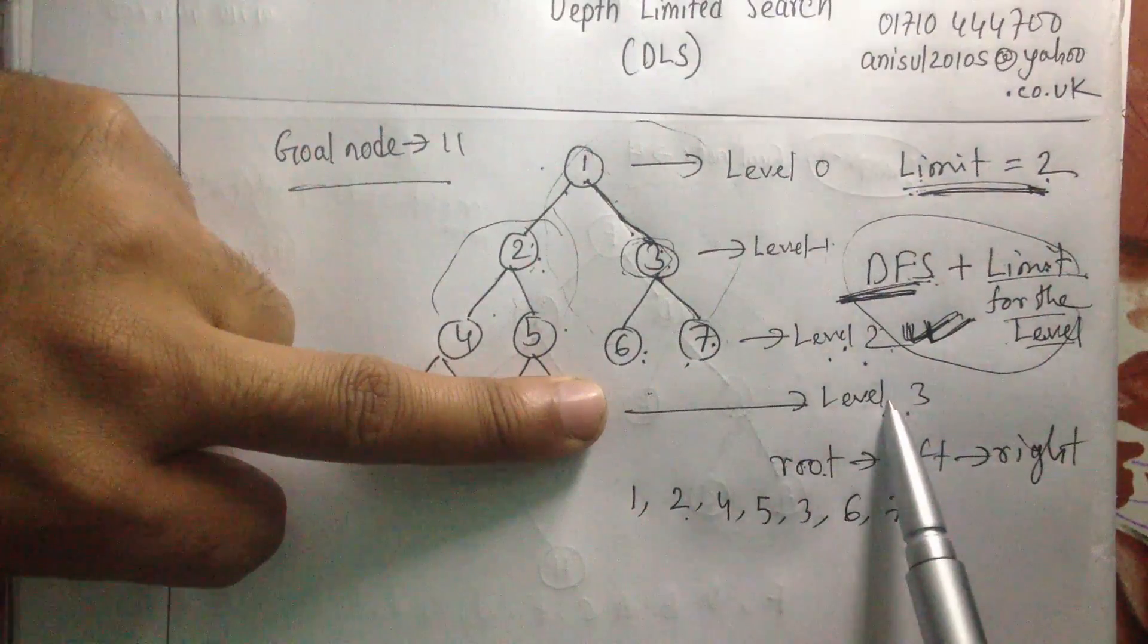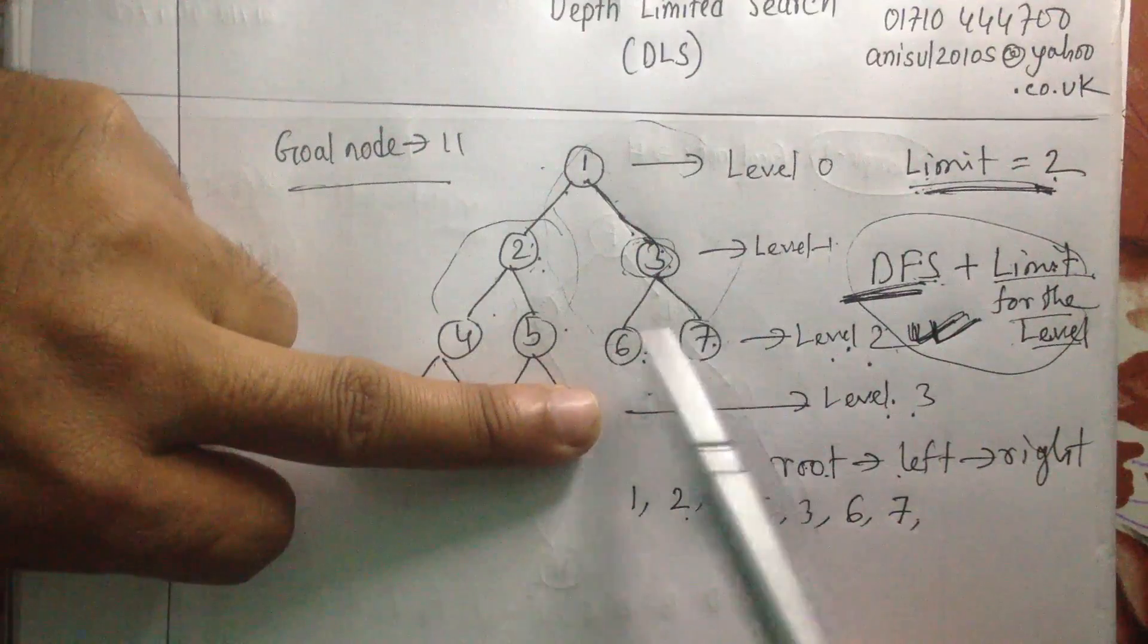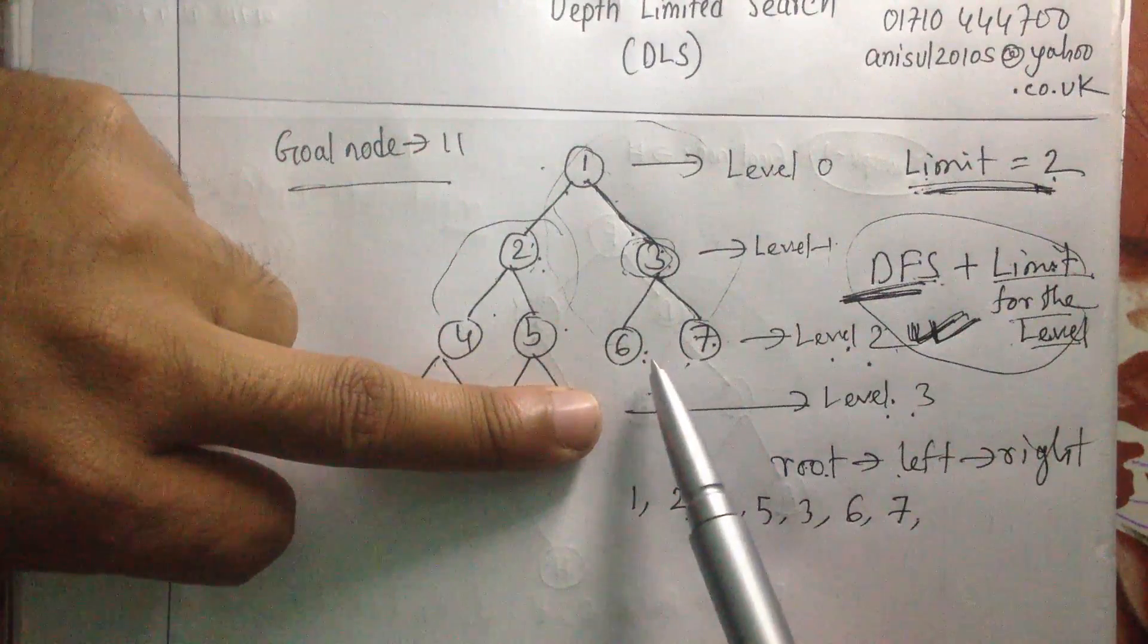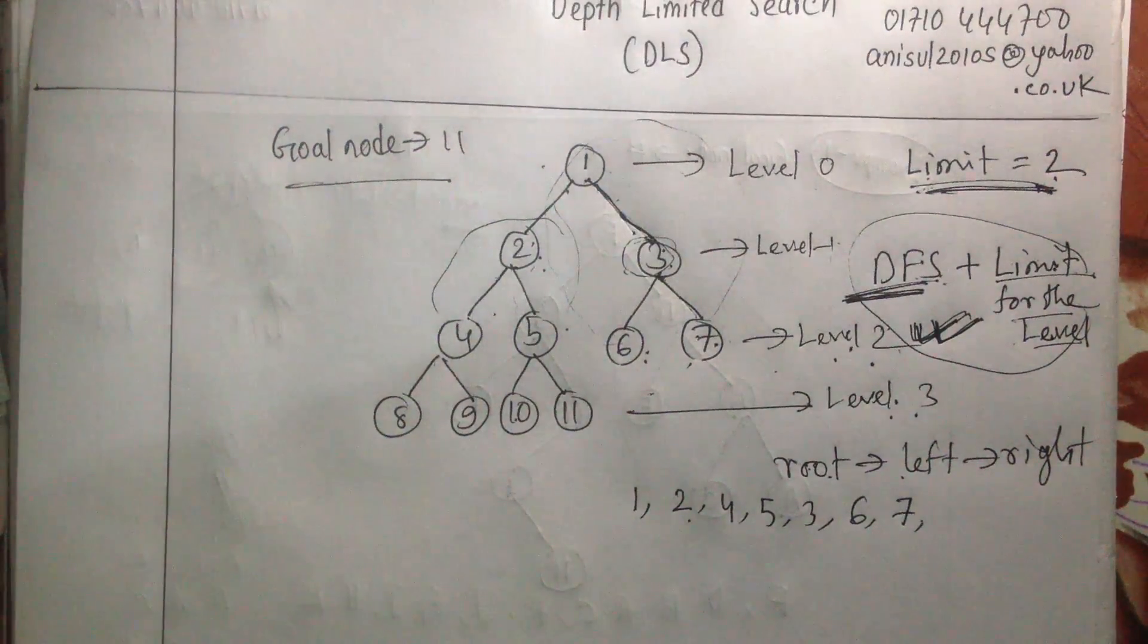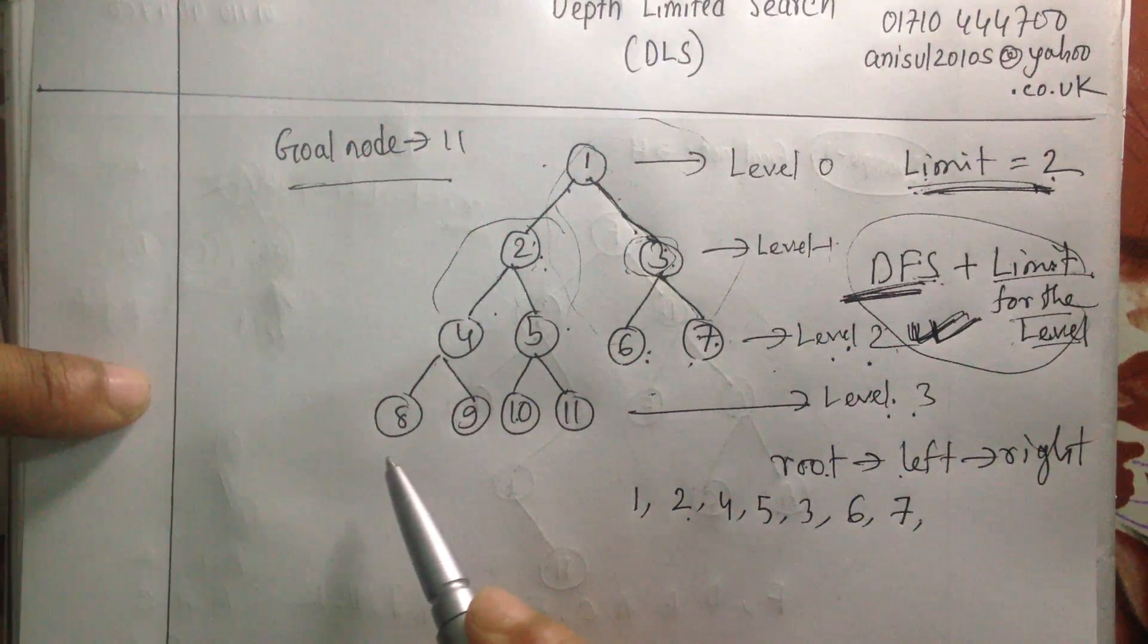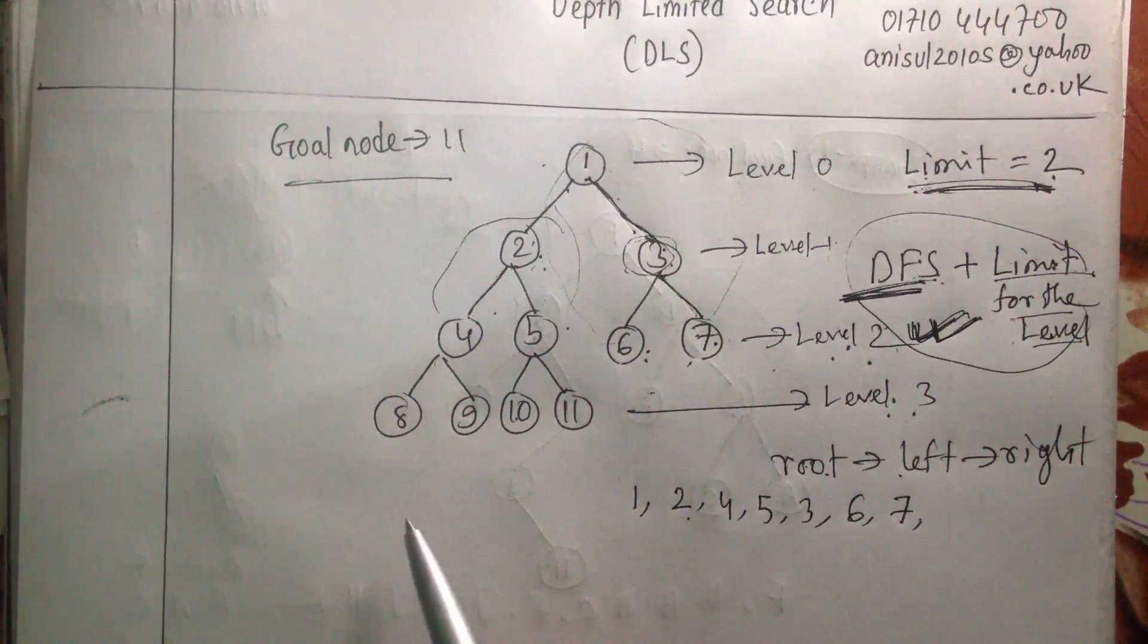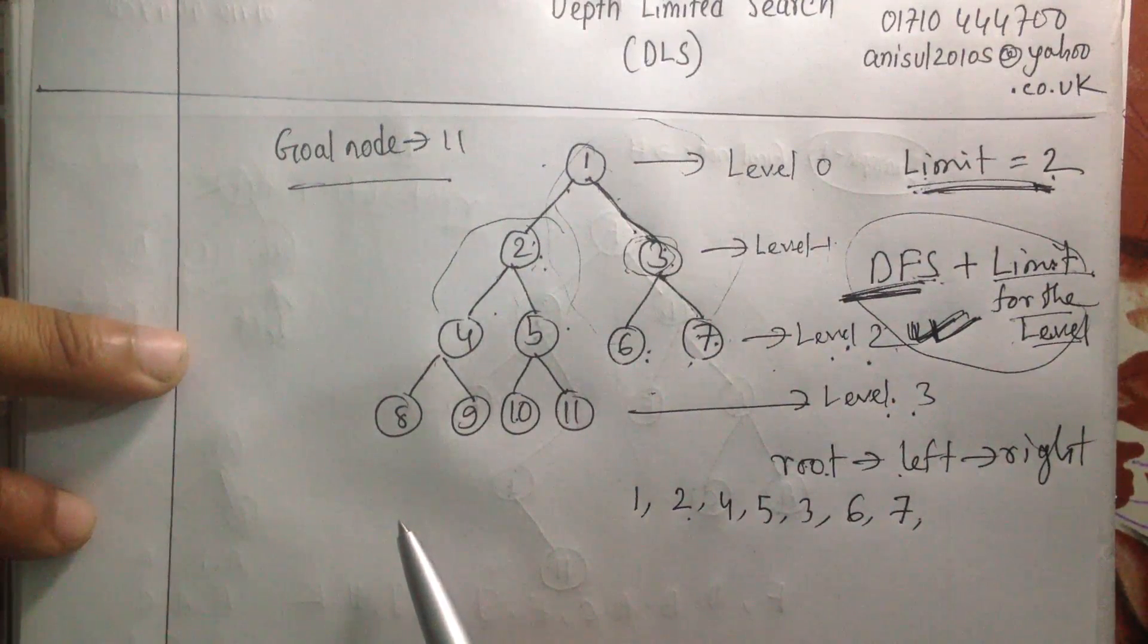You don't have to go to level 3. But remember one thing that our goal node was 11. Have I found out the goal node? No, we haven't found it out because our goal node is in level 3. So there is a problem with this depth limited search. It is not a complete searching algorithm. It doesn't guarantee you that you will find out the solution or your destination node.